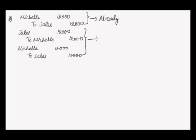You can also replace these two entries with a single entry. So you can just balance it out and write it like: Sales to Michelle $2,000. This would be having the same effect as these two journal entries would have.